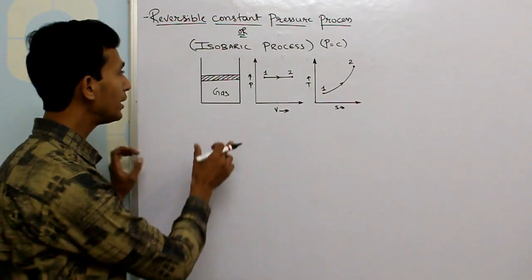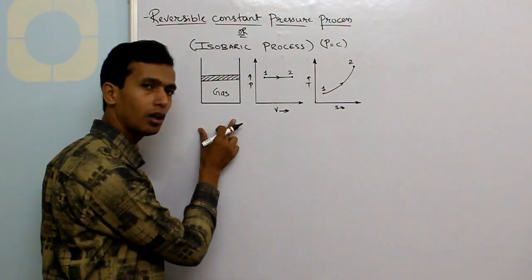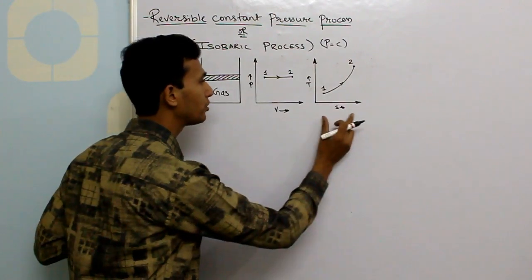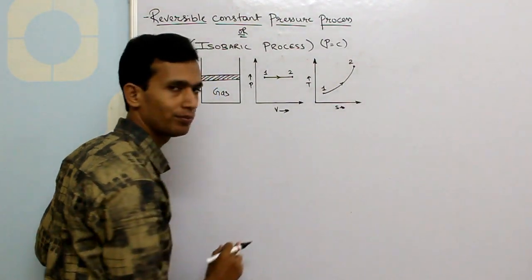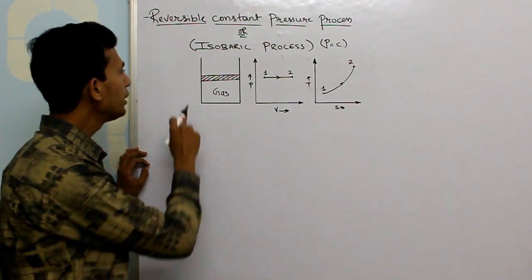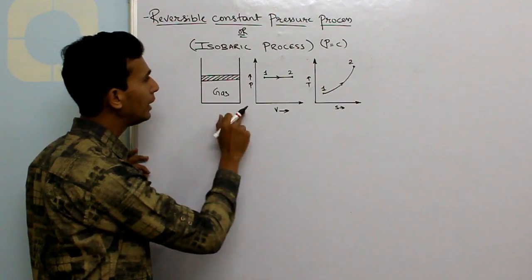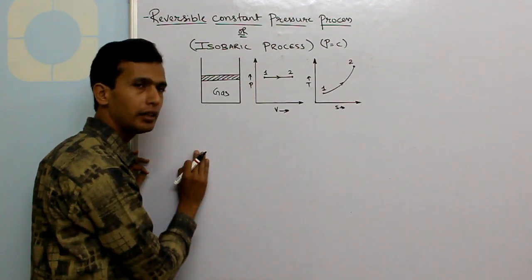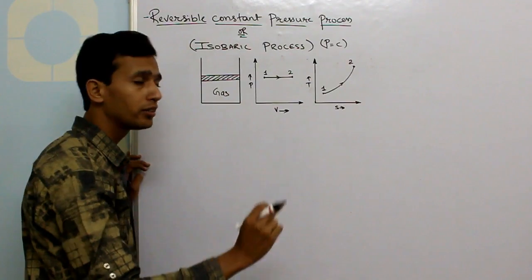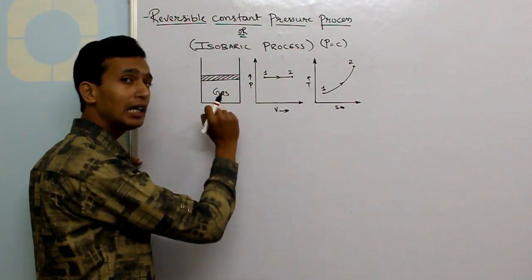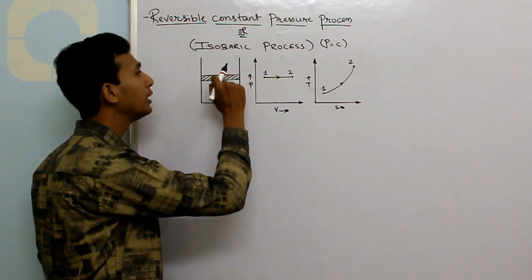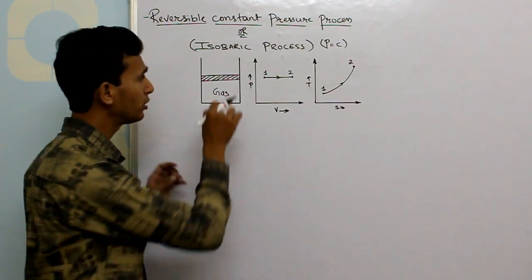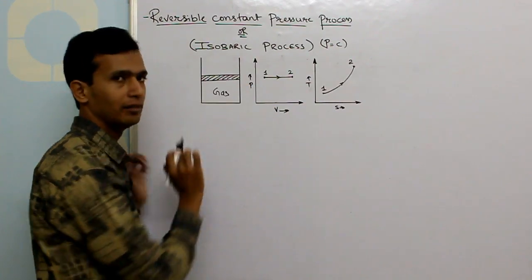This is the diagrammatic representation of the process. This is the PV chart and this is the TS chart. Here we have a cylinder with a certain quantity of gas inside it, and there is a piston which is movable — freely movable in the upward or downward direction. This is the piston which can slide.